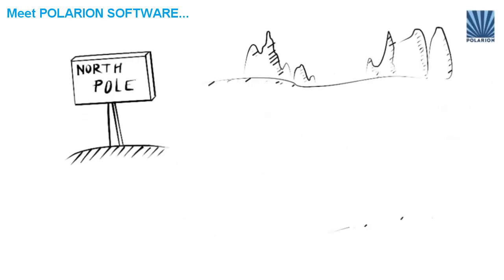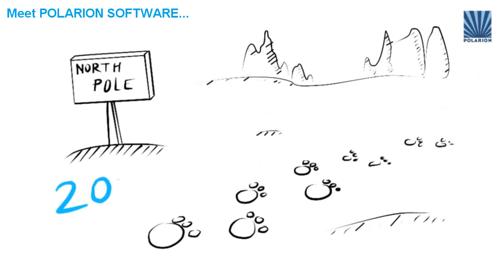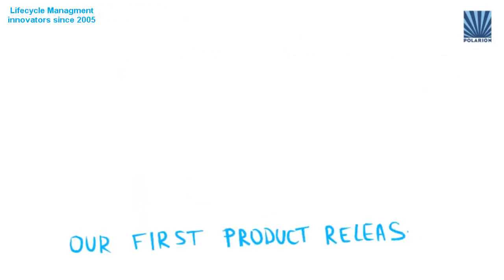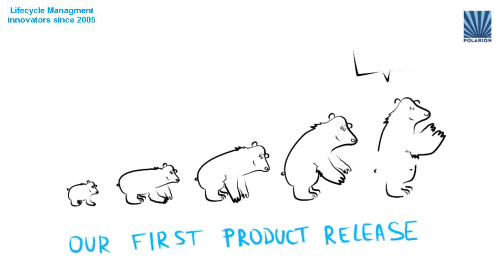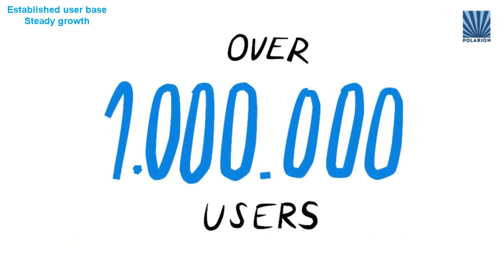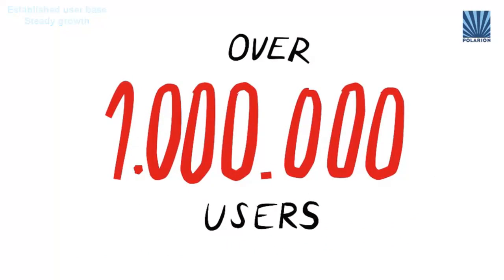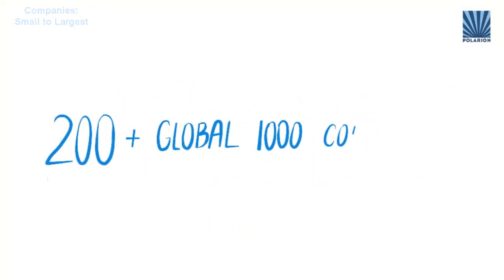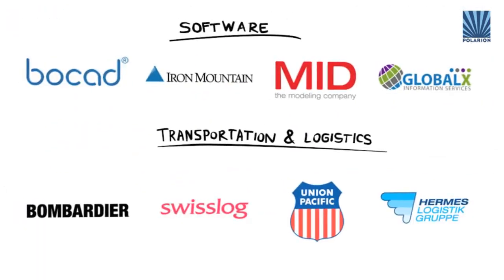When considering a new solution, it's important to know who you're dealing with. You might like to know that we've been blazing the trail in application lifecycle solutions ever since 2005. Today, over 1 million people use Polarian solutions every day, in a wide variety of industries, in hundreds of companies from small and medium sized, all the way to major global names everyone knows.